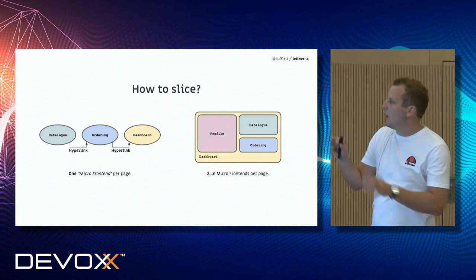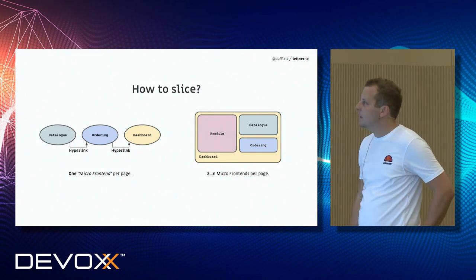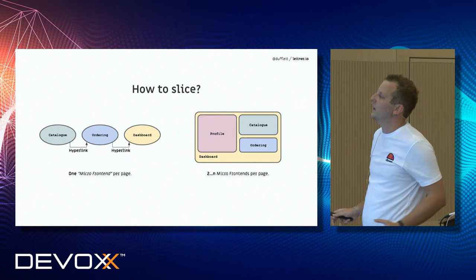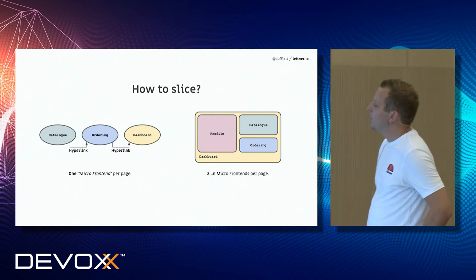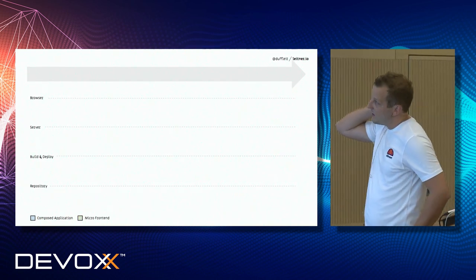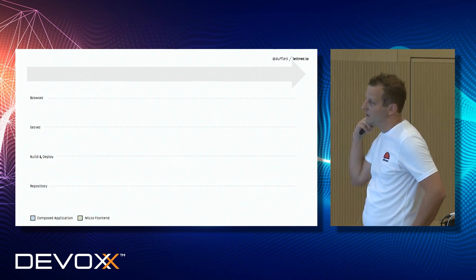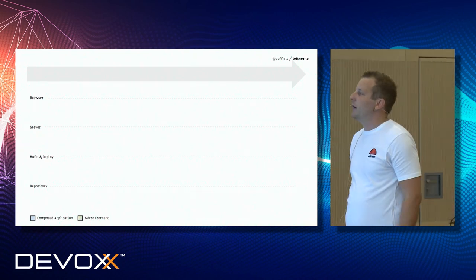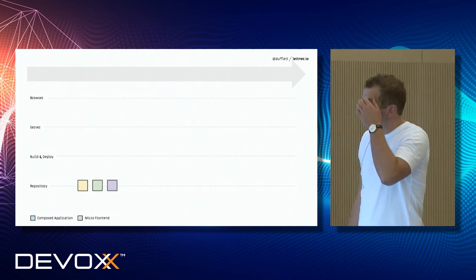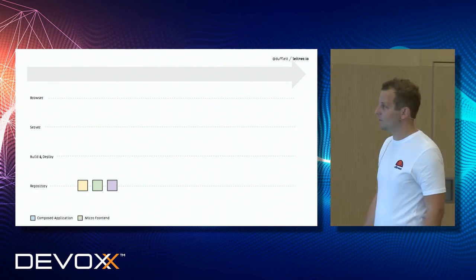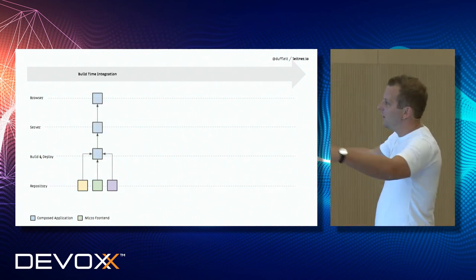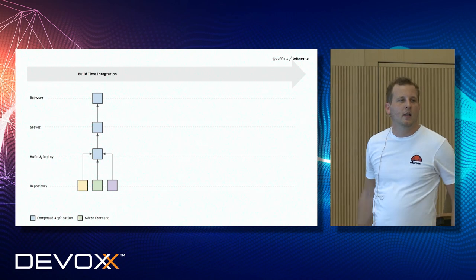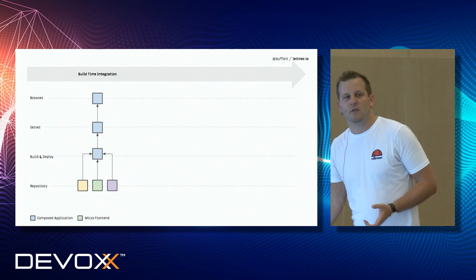Let's take a look at the approach where we plug multiple frontends into one application. The usual question is: how do we integrate them? There are multiple integration strategies. The first one is build-time integration — we aggregate all applications together during build time, deploy them once, and if the user hits our application, they get the full aggregated bundle.